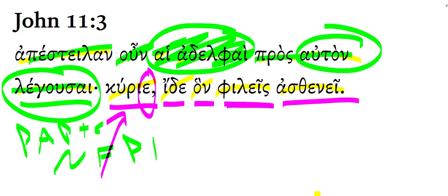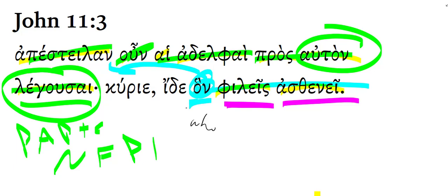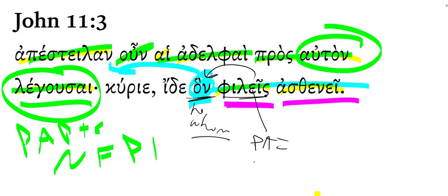Or 'he whom you love is sick.' If you're not familiar with the term 'headless relative clause,' that's what we have here. There's no antecedent prior to the hon in the sentence — that is a relative pronoun with no head noun referring back to, so it's a headless relative clause. Rather than translating it as 'who,' we translate it as 'he whom' because it's accusative. He whom you love — phileis is just a present active indicative, second person singular. He whom you love is ill, or is sick.